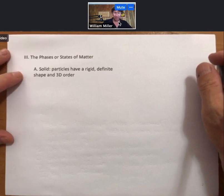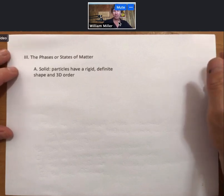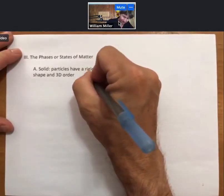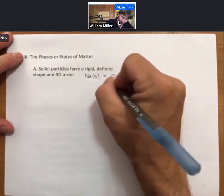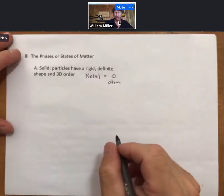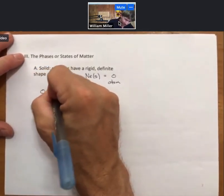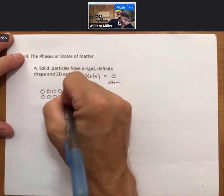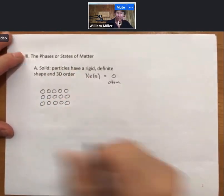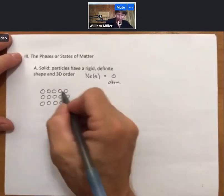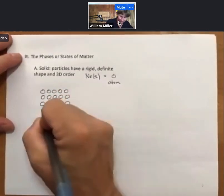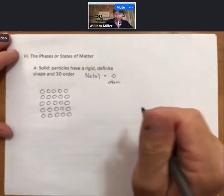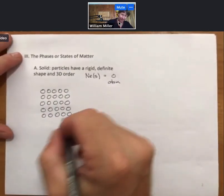Our picture of a solid is that the particles have a rigid, definite shape and three-dimensional order. If we were to imagine at a very low temperature, neon solid, we chose neon because it's an atom, and we'll draw each atom as a circle. We might imagine that those atoms have a three-dimensional order, so I can only show two dimensions here on this paper, but that'll be fine. That's a good schematic representation, and they are close to touching, whatever touching means, and we'll talk about that.